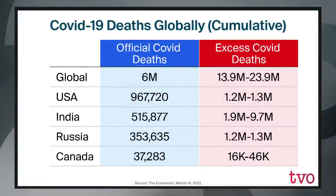With those two definitions and the distinction thereof now on the record, let's get the chart brought up. We can see how the two columns are really quite different. This is COVID-19 deaths globally, and we have two columns here: official COVID deaths and then excess COVID deaths. If you look at the global figure, it's 6 million official deaths, but the excess deaths takes us anywhere from almost 14 million to almost 24 million. How about in the United States? Official deaths, almost a million.